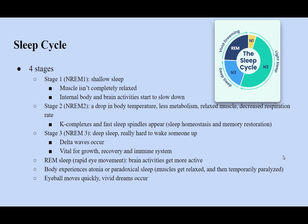REM sleep stands for rapid eye movement sleep, and the brain activities get more active, almost near the level when you are awake. On the other hand, your body experiences atonia, or paradoxical sleep, which is the state when your muscles get relaxed and then temporarily paralyzed, except for the eyes and diaphragm muscles that control breathing. Even though your eyes are closed, the eyeball is moving quickly — this is how this stage gets its name, REM sleep. REM sleep is where your vivid dreams come from, which can be explained by the active and intense brain activities. As you continue sleeping and enter a deeper sleeping mode, you will spend more time in REM sleep, especially in the second half of the night. In total, REM sleep makes up 25% of adult sleep.